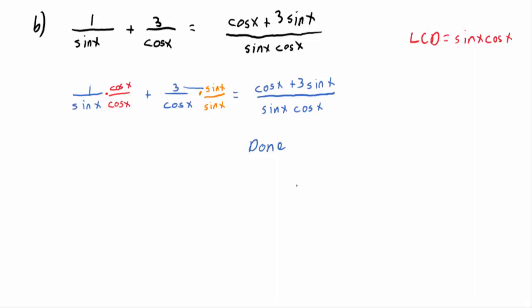You could have started with the right side and undone the addition to get two separate fractions, then simplified to get the left side — that would work too. But I wanted to show the technique of combining two separate fractions into one, because that will come up again. This technique is just algebra — we don't always use other identities within proving a given identity; we often just use algebraic techniques.